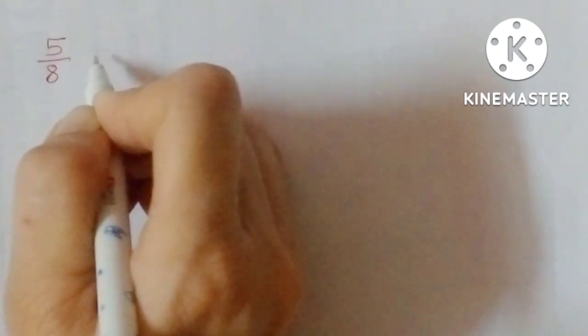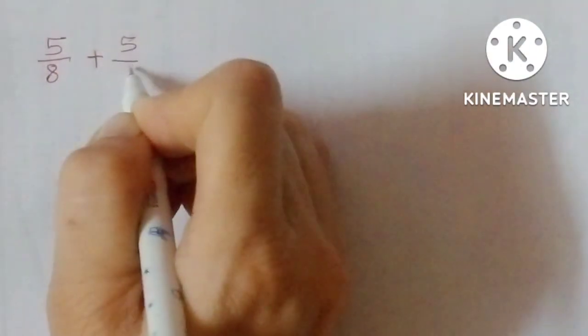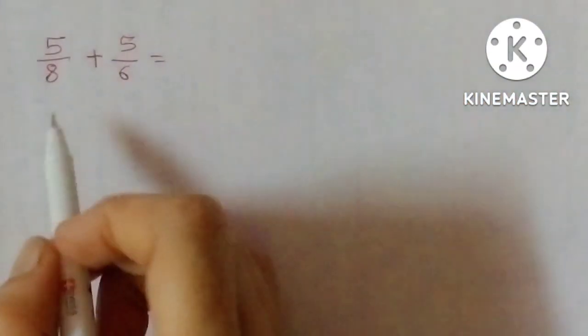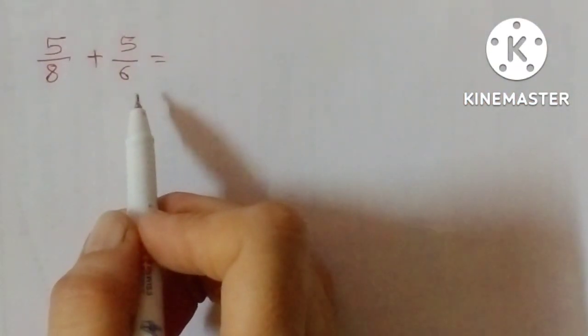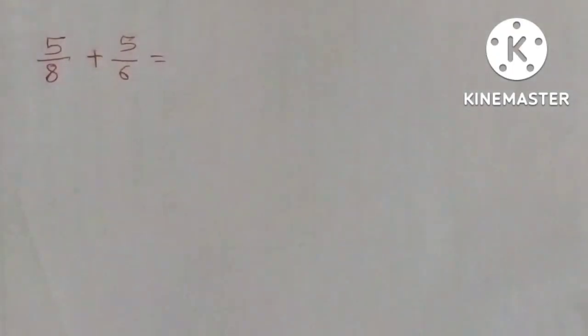5 upon 8 plus 5 upon 6. Denominators are different. Convert unlike fractions to like fractions and then add them.